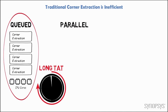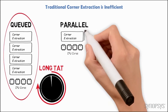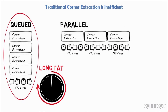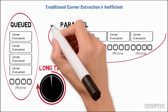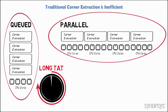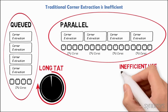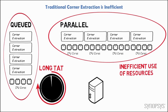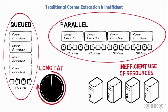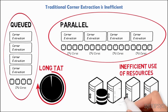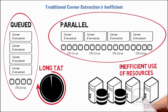The other traditional approach is to run all corner extractions in parallel on separate CPU cores. However, this can be very expensive and inefficient, requiring a large pool of machines to be tied up at once and tens to hundreds of gigabytes of disk space to be available to accommodate multiple extractions with redundant steps.